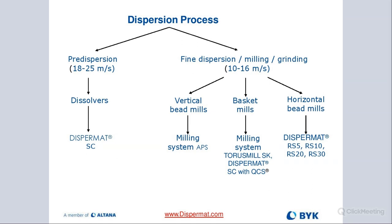When we pre-disperse using a dissolver, the tip speed or peripheral speed is 18 to 25 meters per second — that's optimum. Anything more than that doesn't really improve the dispersion process; anything lower will just take more time. When we are milling — some people call it grinding or fine dispersing — we reduce the rotor speed and go down to about 10 to 16 meters per second.